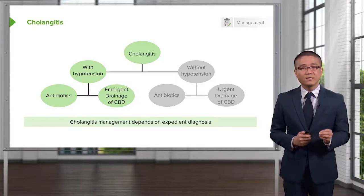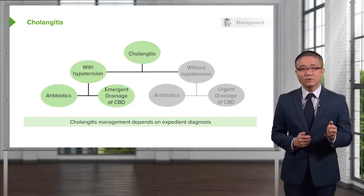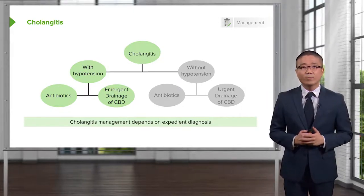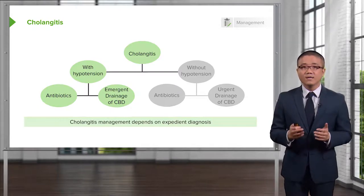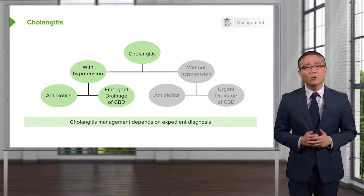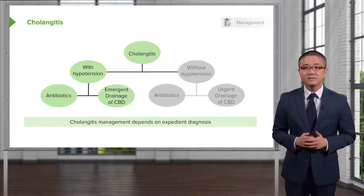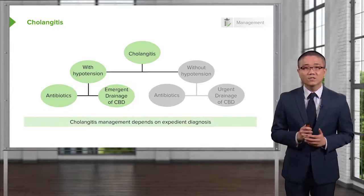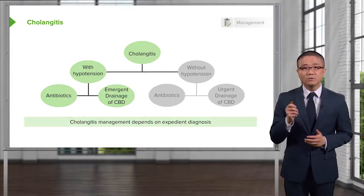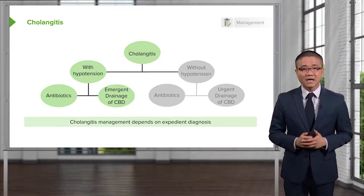This doesn't necessarily mean surgery, but the common bile duct can be drained via percutaneous techniques. If you're presented with a scenario where the patient presents with cholangitis and has hemodynamic instability, the appropriate next management is not further workup. Rather, it is to do emergent drainage of the common bile duct, most likely percutaneously.